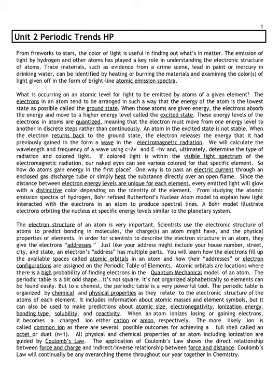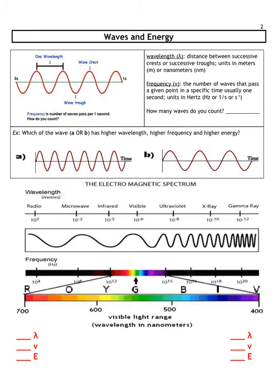We use light to study atoms and what they're comprised of, as well as their chemical and physical behaviors. With light comes waves — light behaves like a wave and has wave-like characteristics. The first thing we want to look at is wavelength, represented by the lambda symbol, which looks like an upside-down Y. It represents the distance between successive crests or successive troughs, and is measured in meters, though light waves are very small so you'll often see wavelength in nanometers.